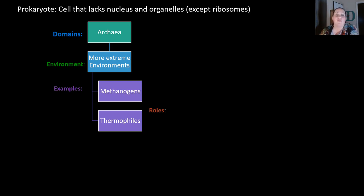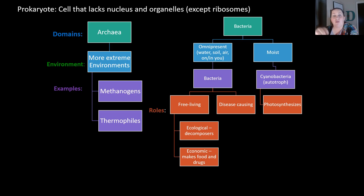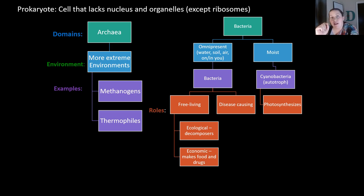Most prokaryotes are in the group bacteria. Bacteria are omnipresent — meaning they're found pretty much everywhere: in the water, soil, air, in you, on you. Most of them are free living, meaning they are not out to hurt you. They actually help more as decomposers in our environment and in economics help us make lots of types of food. However, there are some bacteria that are disease causing. Some bacteria must live in very moist environments, like cyanobacteria, which is an autotroph meaning it can make its own food through photosynthesis.